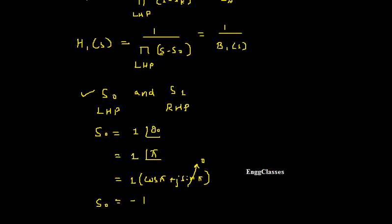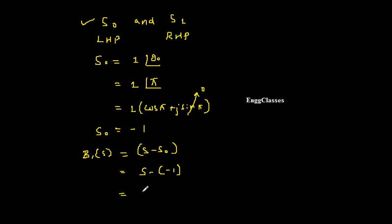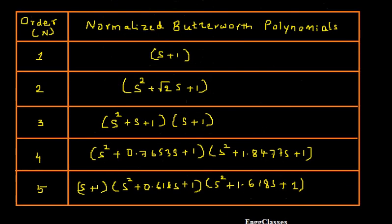So once we get S_0 as minus 1, I can put it in the above formula that is B_1 of S. We said it is S minus S_0. And here I will put it as S minus of minus 1. I got the S_0 as minus 1. So if I put that I am going to get S plus 1 as the Butterworth polynomial B_1 of S. And similarly I can write the transfer function as well. H_1 of S is equal to 1 divided by S plus 1. So this is the Butterworth polynomial and this is the corresponding transfer function. This is how we get B_1 of S is equal to S plus 1 as I stated over here.